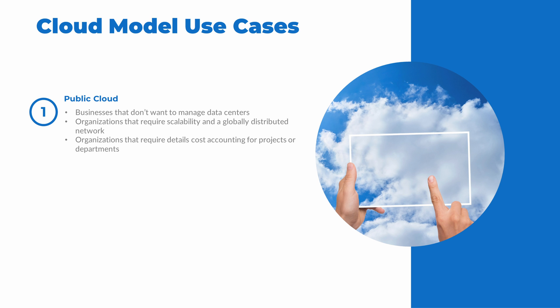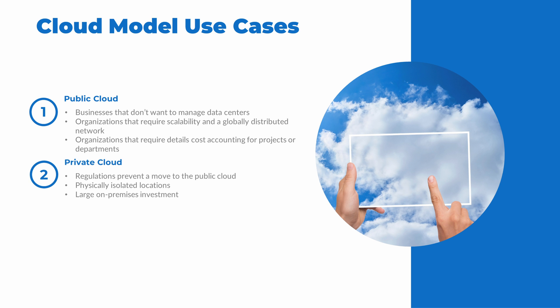The public cloud is a good option for organizations that don't want to manage data centers, need scalability and globally distributed networks to keep services close to end users, or need to map infrastructure costs directly to a department or project. In Azure, costs can be assigned to a group and reported on to clearly identify where resources are used. Organizations may stay in a private cloud if regulations prevent moving data to the cloud, if a location is physically isolated with little or no internet access, or if they have a large existing investment keeping them on-premises.